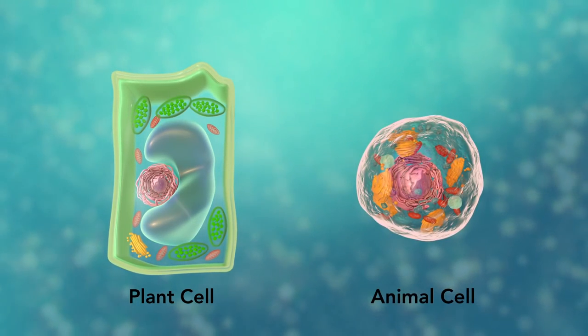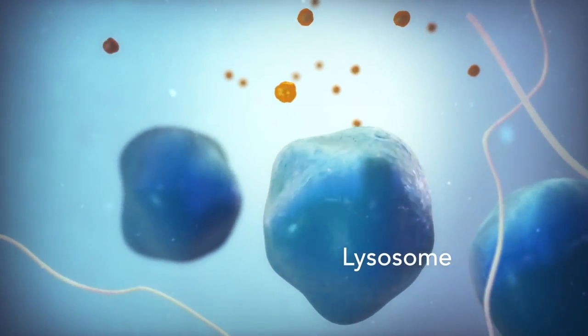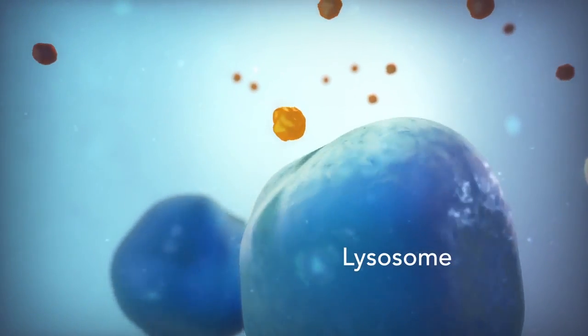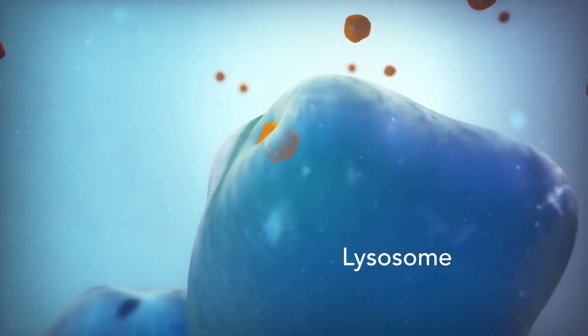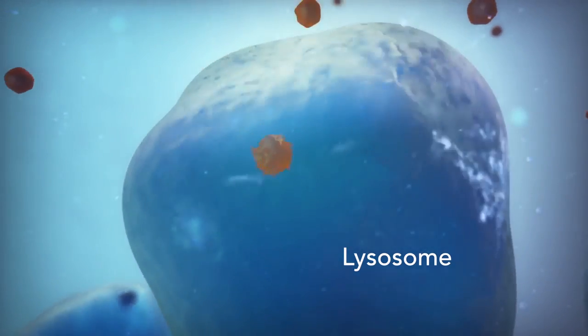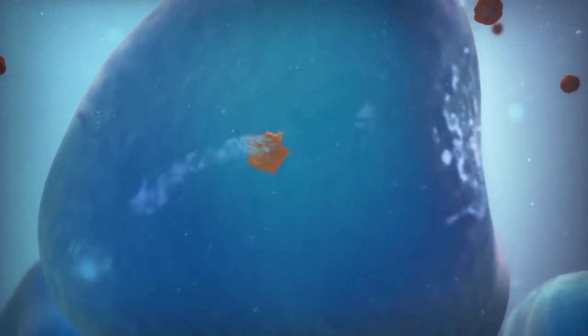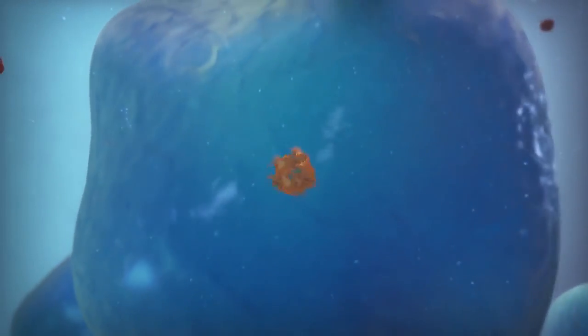Going back to the animal cell, you will see an organelle called a lysosome. Lysosomes are the garbage collectors that take in damaged or worn-out cell parts. They are filled with enzymes that break down this cellular debris.